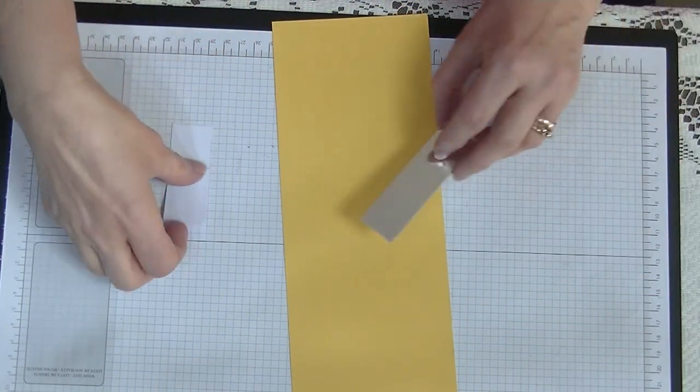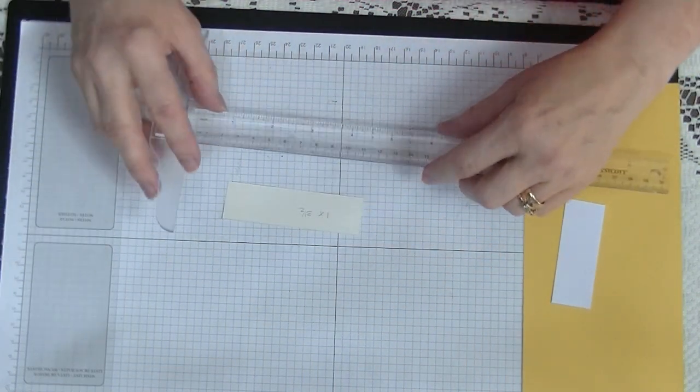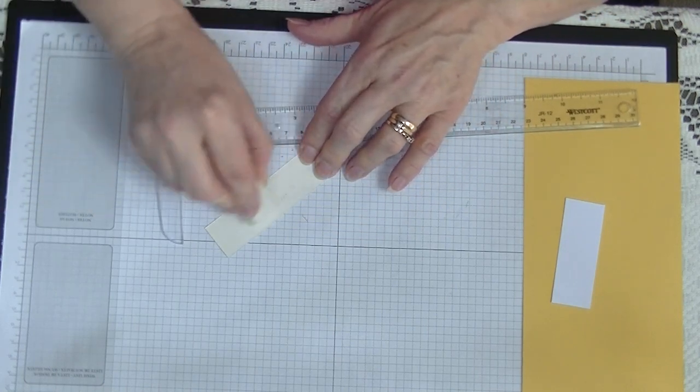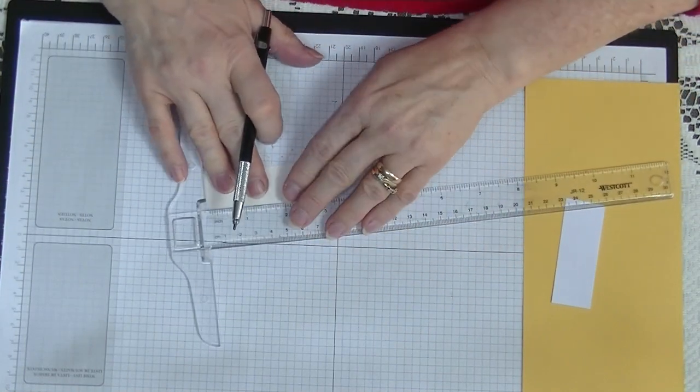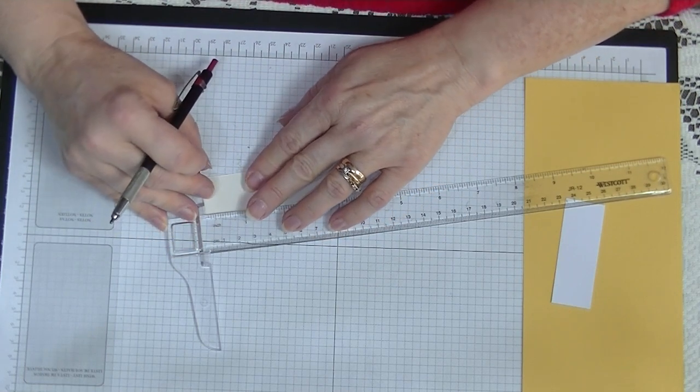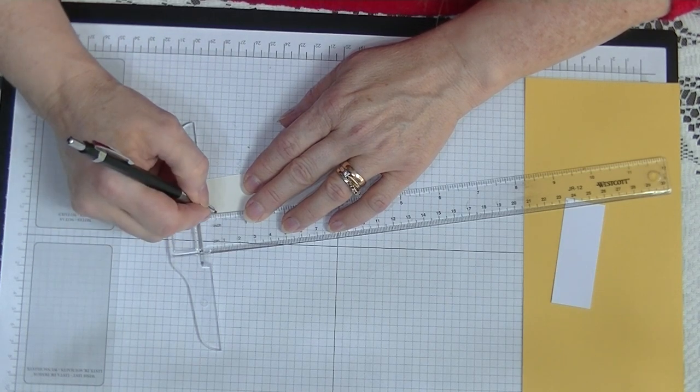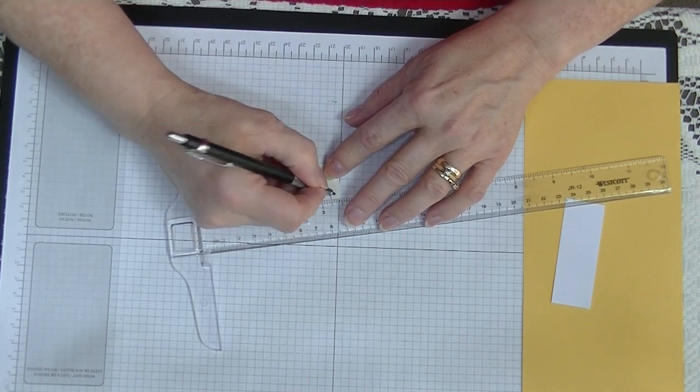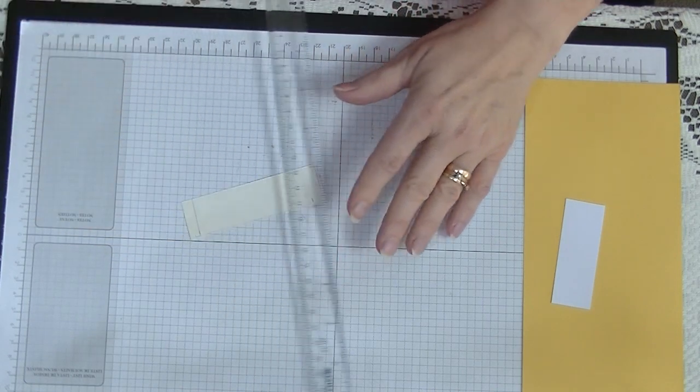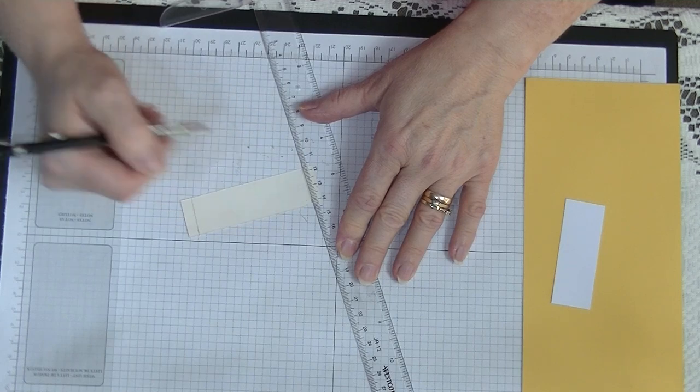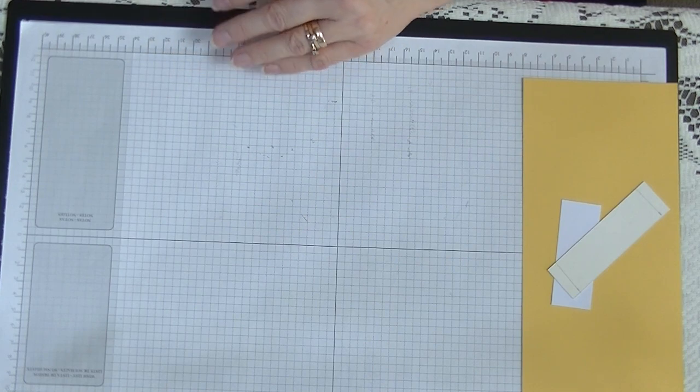We're going to do our bit of scoring first. I'm going to do this piece first, because we need to turn this over onto the back. We need to mark this at the quarter inch at that end and this end, and draw a line. We're going to just draw a line like so. That's our first thing we need to do on that one, and then we're going to bring in our scoreboard and do all our scoring at once.